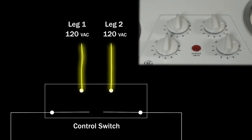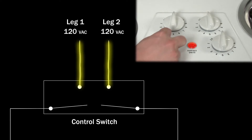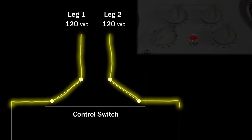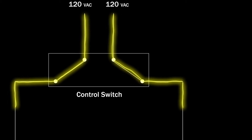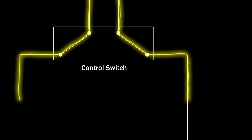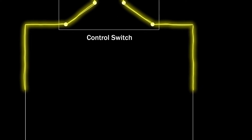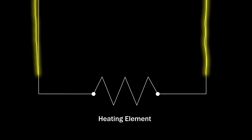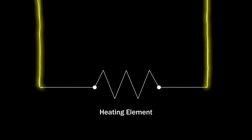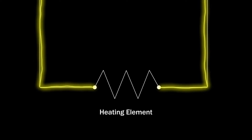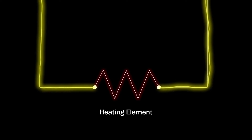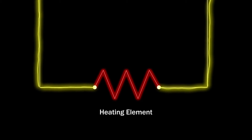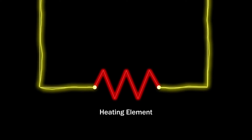When the selector knob is turned to a heat setting, the switch allows the first leg of voltage to travel to one side of the heating element and the second leg of voltage to travel to the opposite side. When the voltage reaches the heating element, the circuit is closed and the element begins to heat.